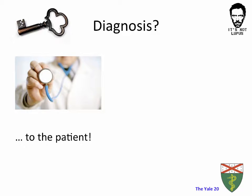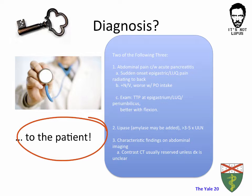Getting back to acute pancreatitis: how do we make the diagnosis? Do we need imaging, further lab testing, or is the clinical exam alone sufficient? Acute pancreatitis is a clinical diagnosis. There are three criteria, and a patient meeting two of those three can be safely diagnosed with acute pancreatitis, after which we use scoring criteria to assess severity. The criteria come from the history and physical examination, lab findings, and imaging if the diagnosis cannot be made by the first two criteria.